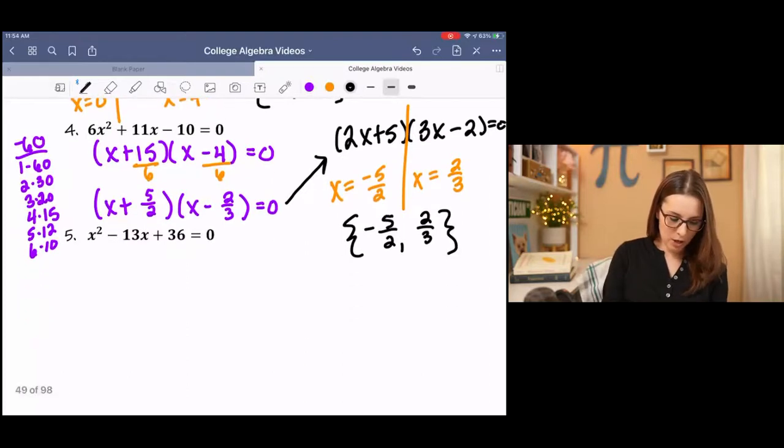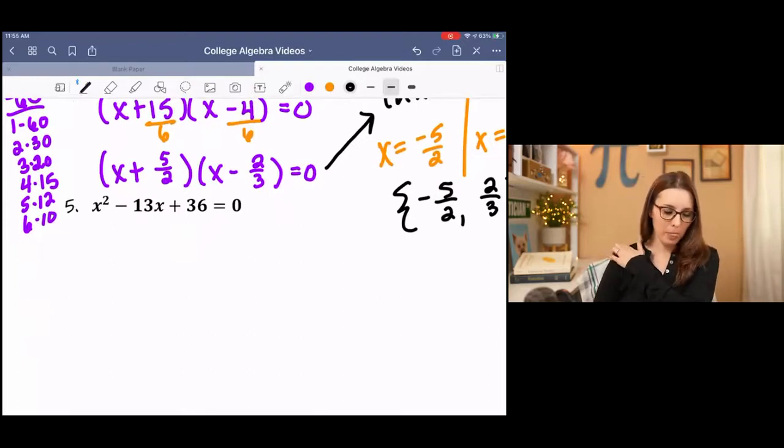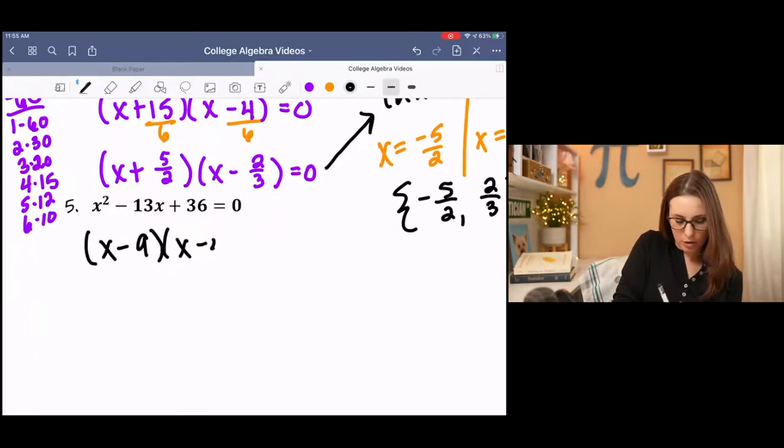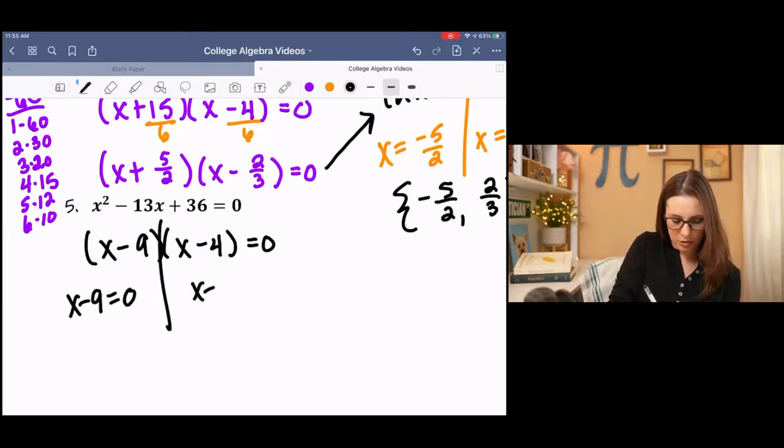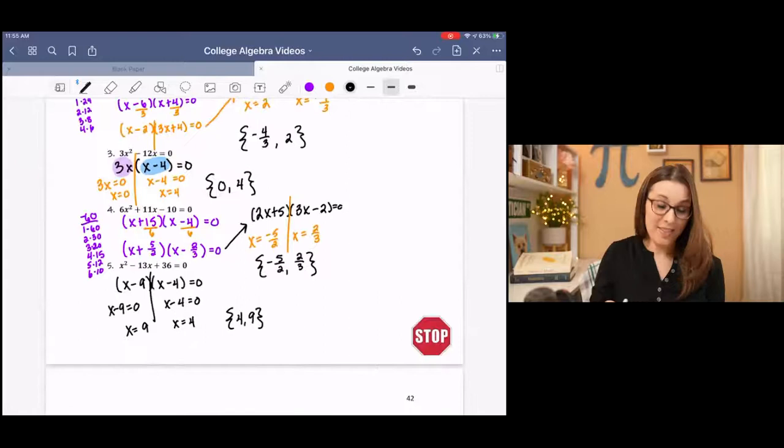And then we have the last one, go ahead and pause it and try it and then come back and check your answer. Hopefully you got (x - 9) times (x - 4). Split them up. Set each one equal to zero. And you should get 9 and 4.